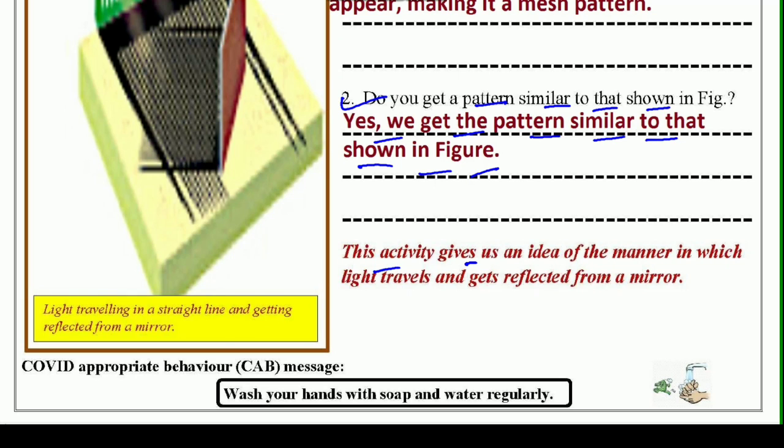This activity gives us an idea of the manner in which the light travels and gets reflected from a mirror. Yeh activity hume is baat ka idea deti ki kis prakar light travel kerti hai aur mirror se woh kaise reflected hoti hai. Light traveling in a straight line and getting reflected from a mirror. Is tarah se hume is activity ke through yeh baat achhe se samajh mein aaya.